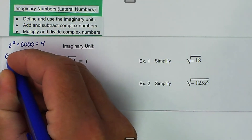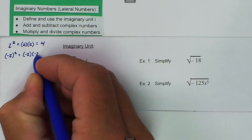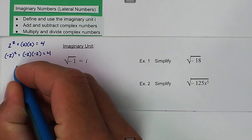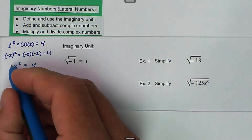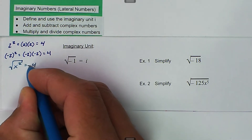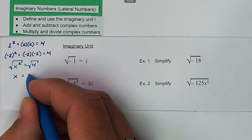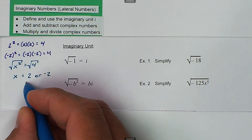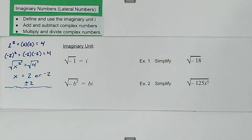We also know that if we say negative 2 squared, in parentheses, that's the same thing as saying negative 2 times negative 2, and that is also equal to 4. So if we were given a problem to find x, and we said x squared is equal to 4, we know that the inverse operation is we take the square root of both sides, and then x could be equal to 2 or negative 2. Sometimes we write it as plus or minus 2.